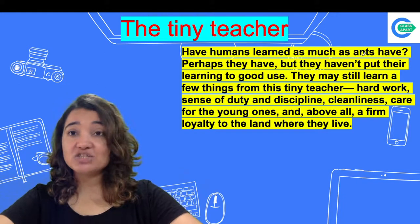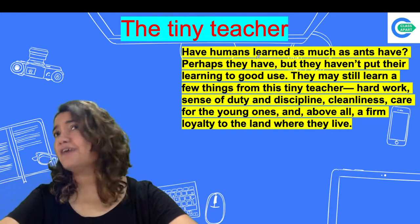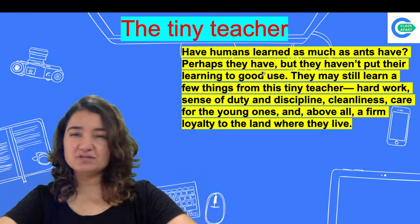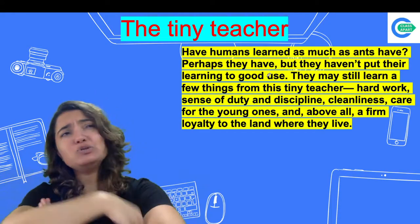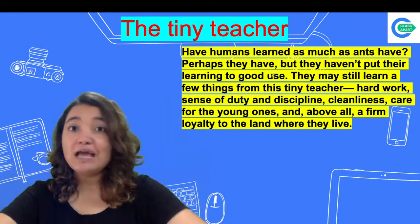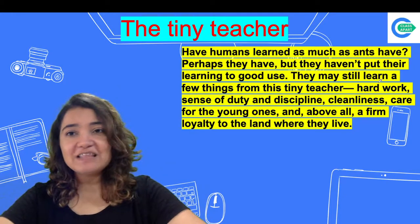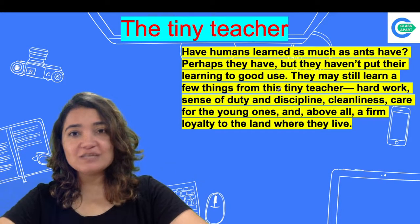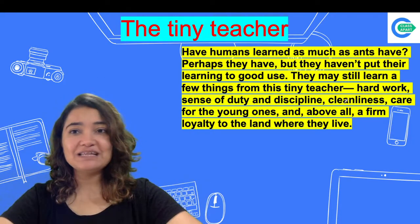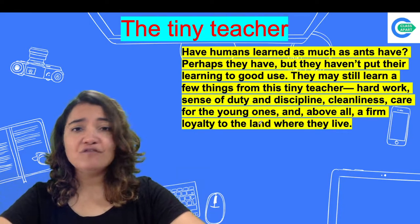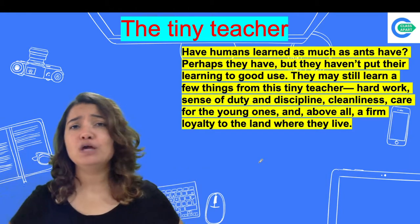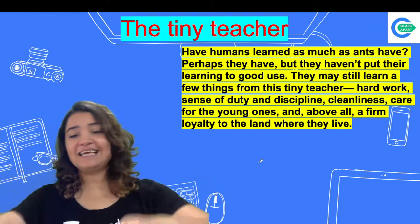Have humans learned as much as ants have? Definitely not. Perhaps they have, but they haven't put their learning to good use. Do humans have such a perfect society? No — everybody is busy fighting with each other. But ants have a perfect society. They may still learn a few things from this tiny teacher. Hard work, sense of duty, discipline, cleanliness, care for the young ones, and above all, a firm loyalty to the land they live in. We humans also need to learn a lot of things.